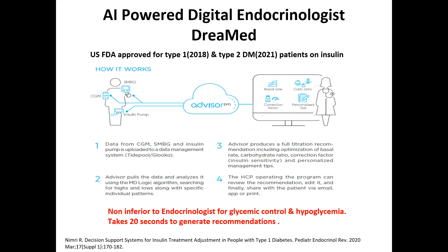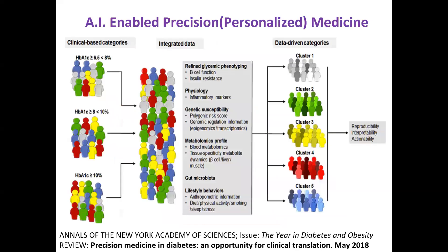An AI-powered digital endocrinologist is a dream becoming reality — one software started from Israel provides a fantastic way of using insulin for Type 1 diabetic patients, whether on a pump or not. It gives detailed advice on basal rate, correction factor, insulin sensitivity factor, and insulin-to-carb ratio for patients on insulin pump, SMBG, or CGM.